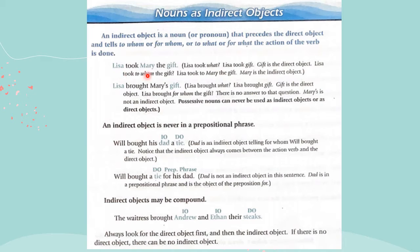For example: Lisa took Mary the gift. Lisa took what? Lisa took the gift. So gift is what she took — she didn't take Mary anywhere, she took the gift. Gift is your direct object. Lisa took the gift to whom? To Mary. So Mary is the indirect object. The indirect object has to come in front of the direct object. If you have an indirect object, it's going to be in front of your direct object.